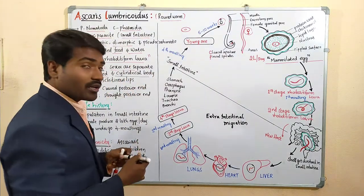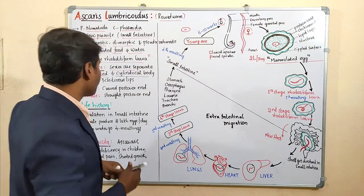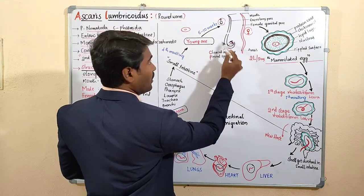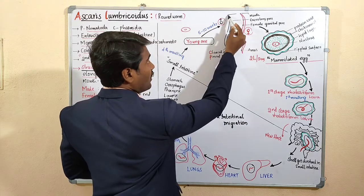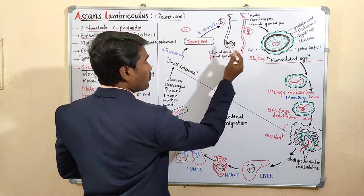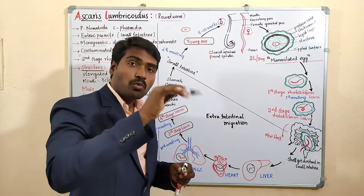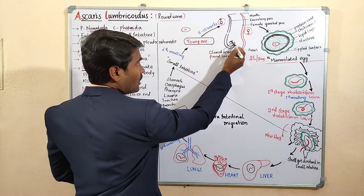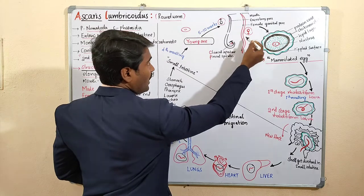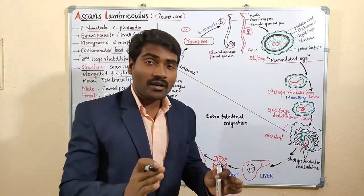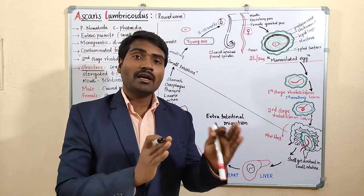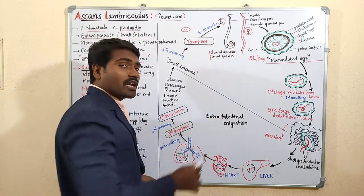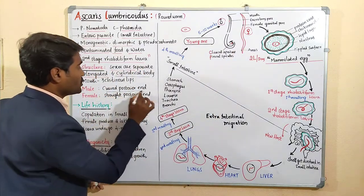The body is elongated and cylindrical. First we talk about the male, then the female. The male has a curved posterior end, whereas the female has a straight posterior end. This is one of the important differences between male and female.